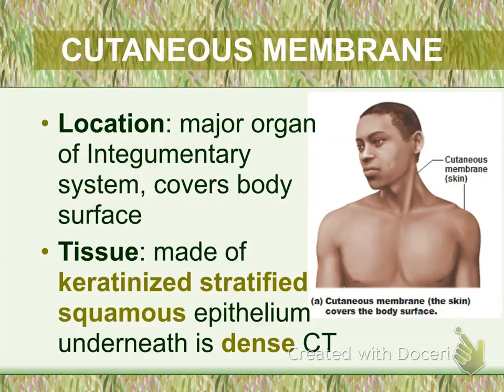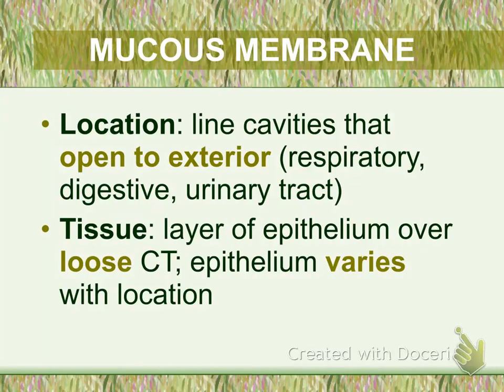The first type of epithelial membrane is the cutaneous membrane. They are located on the body surface and include the skin, which is a major organ of the integumentary system. The type of tissue that makes up the cutaneous membrane is keratinized stratified squamous epithelium with dense connective tissue underneath it.